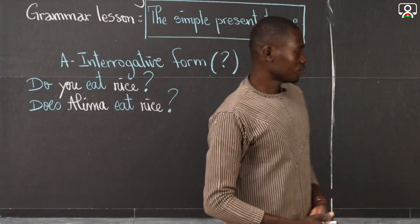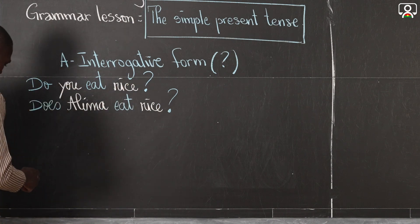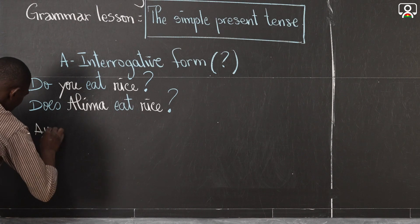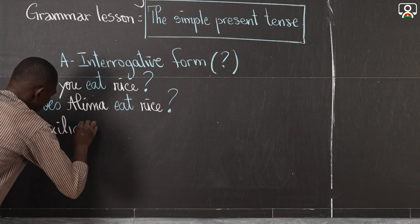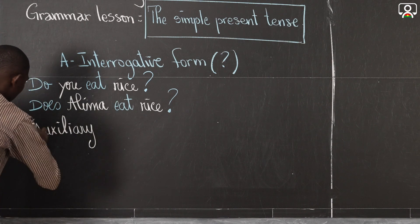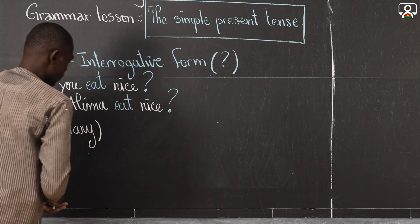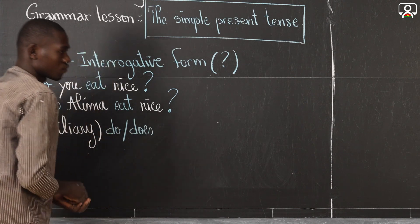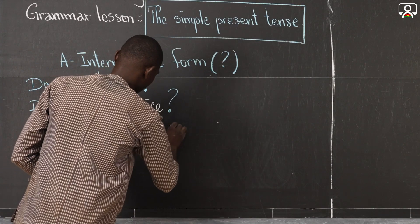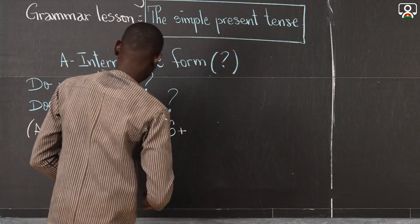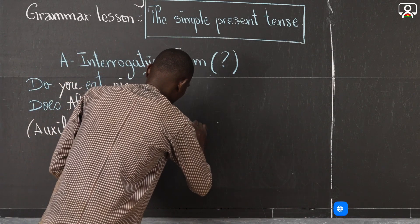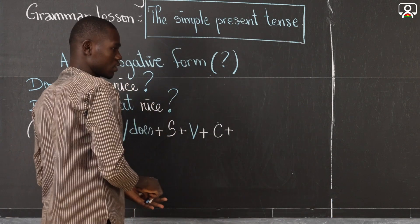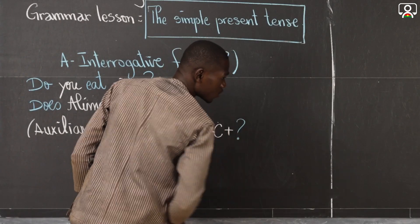The rule is: auxiliary do or does, plus subject, plus verb, plus complement, plus question mark.